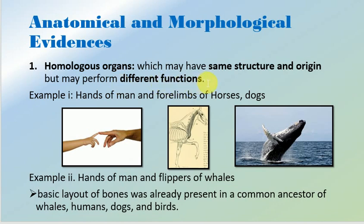When the organisms originated, they were subjected to a similar environment. But later on, when they transferred to different places, their same organs began performing different functions according to the requirement of the habitat. This is how organs can have the same structure and origin but still perform different functions.